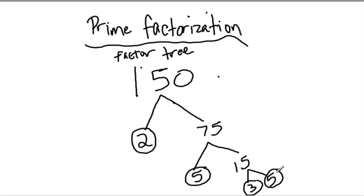Now once you've reached prime numbers on these branches, those branches are done. And what you've in fact found is that 150 can also be written as 2 times 5, 2 times 5, times 3 times 5.